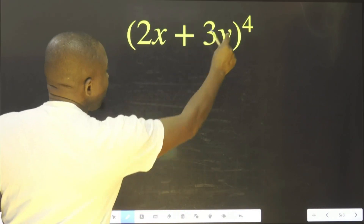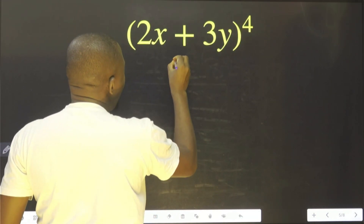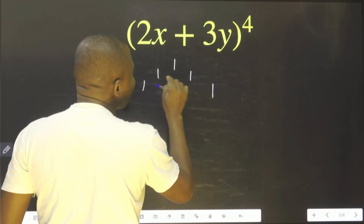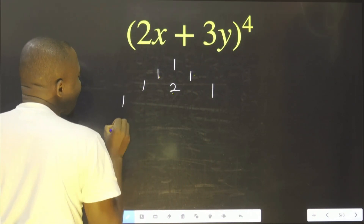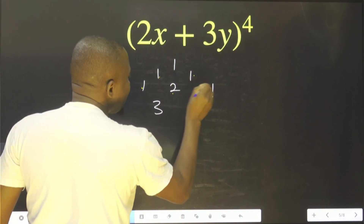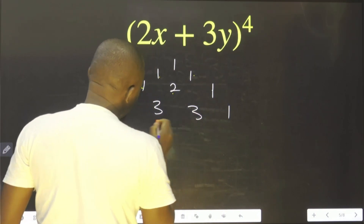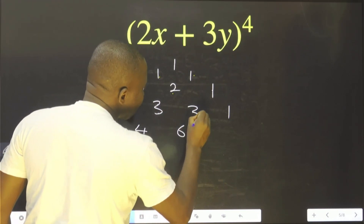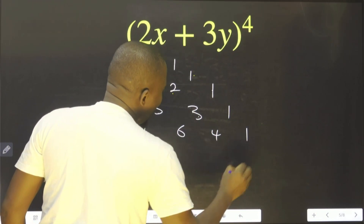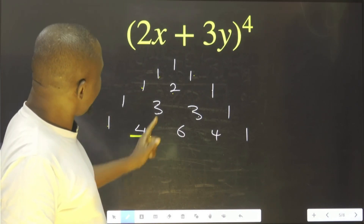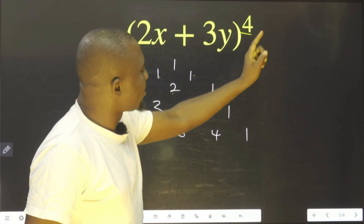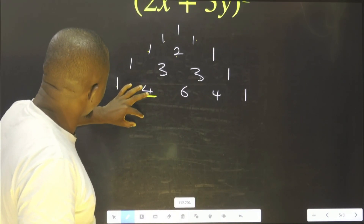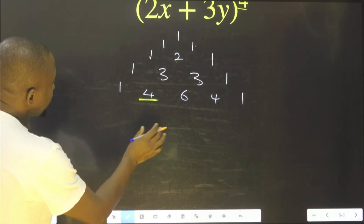We write the triangle until we get to 4. That is to say: 1, 1, 1, 1 - 2 - 1. That is this plus this gives 2. Then I start with 1, this plus this is 3, this is 3, then 1. Then I put another 1: this plus this is 4, this is 6, this is 4, 1. As you can see, after 1, 4 - and 4 is here - it means I should stop. These are the coefficients I am going to use.